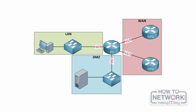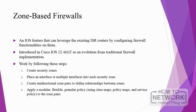Zone-based firewalls work by following these steps: create security zones; place an interface or multiple interfaces into each security zone; create unidirectional zone pairs to define relationships between zones; and then apply a modular, flexible, granular policy — using class maps, policy maps, and a service policy — to the zone pairs.